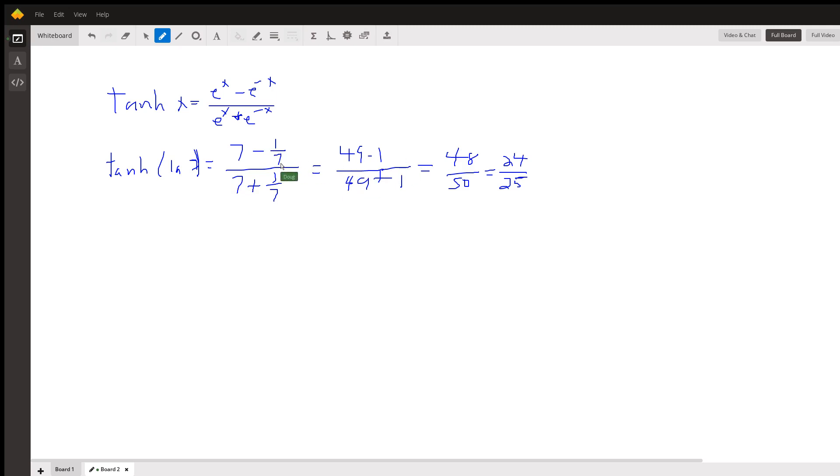which if I remove the complex fractions, remove the little fractions by multiplying numerator and denominator by 7, ends up being 24/25ths, which indeed does reduce to 0.96.